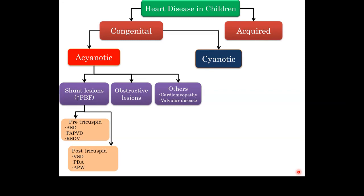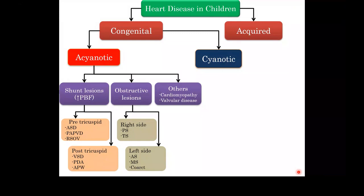Obstructive lesions: to get obstruction you need a valve. The heart has four valves. On the right side, pulmonary stenosis or tricuspid stenosis. On the left side, aortic stenosis, mitral stenosis, or walking down the aorta, coarctation. These babies will not be blue because there is no right-to-left shunt, making them acyanotic heart lesions.